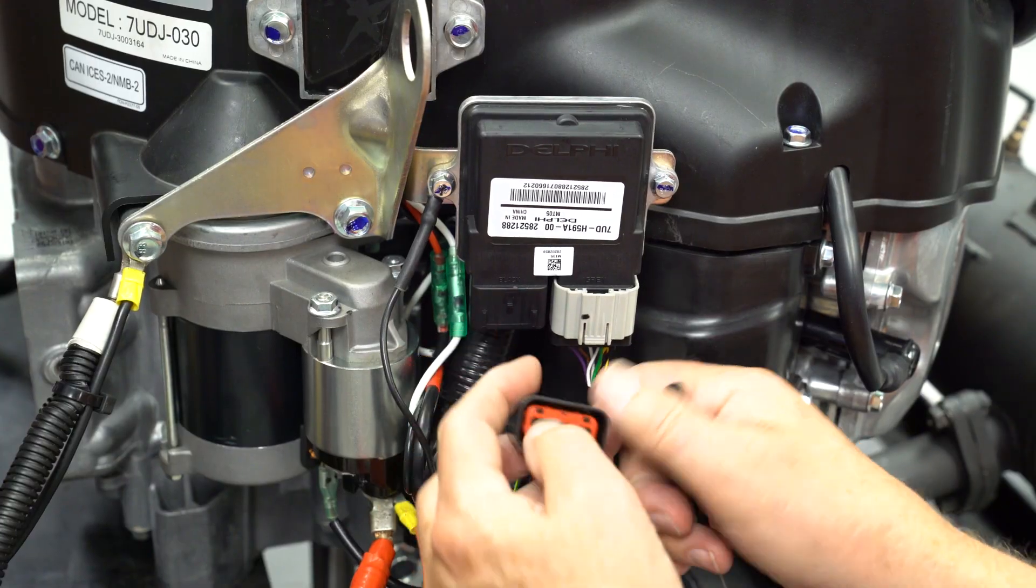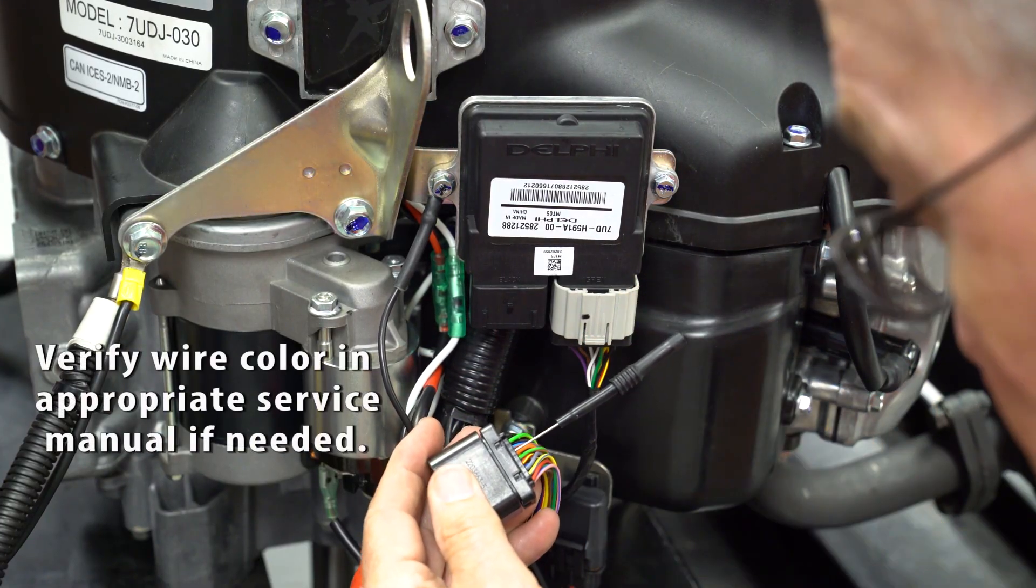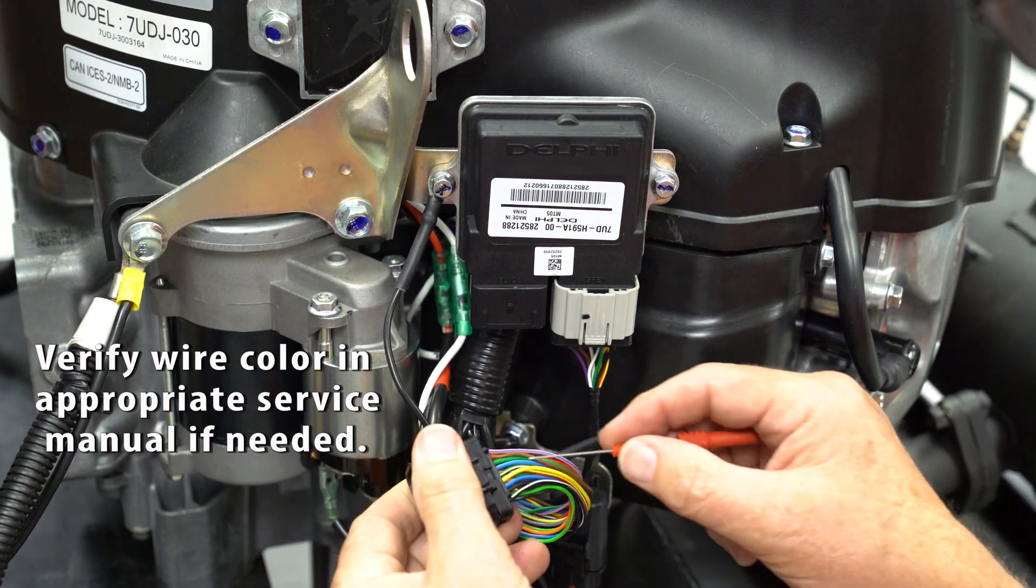You can check the AC output from the crankshaft position sensor at the ECU multi-connector. Back probe to the orange and yellow wires with your peak reading voltmeter or adapter.